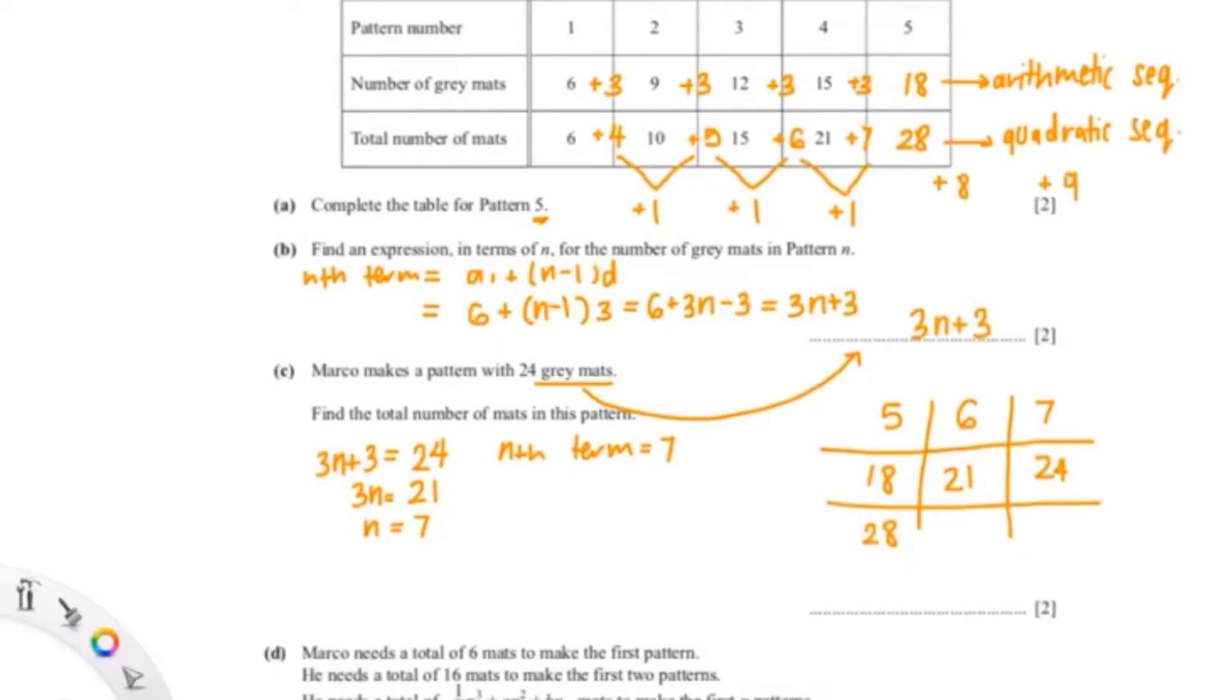So like I said, it is a quadratic sequence, so it's going to add 7 plus 1, which is plus 8, and then plus 9. So 28 plus 8 equals 36, and 36 plus 9 is 45. So our total number of mats in pattern 7 is 45.